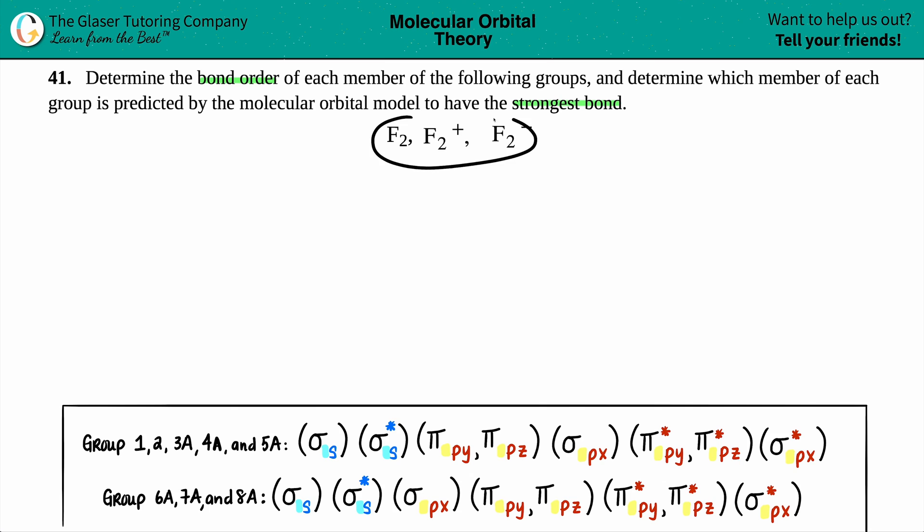Now when they give you a trio of molecules and they're all the same, but two have charges and one is neutral, just make sure that you work with the neutral one first, because then it's easy to manipulate your configurations. So let's go straight for the fluorine, F2, and let's figure out how many valence electrons F2 has.